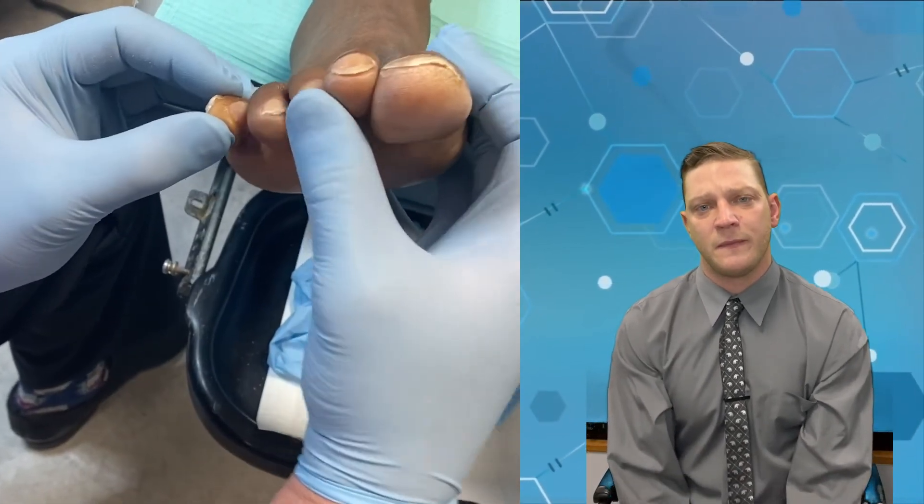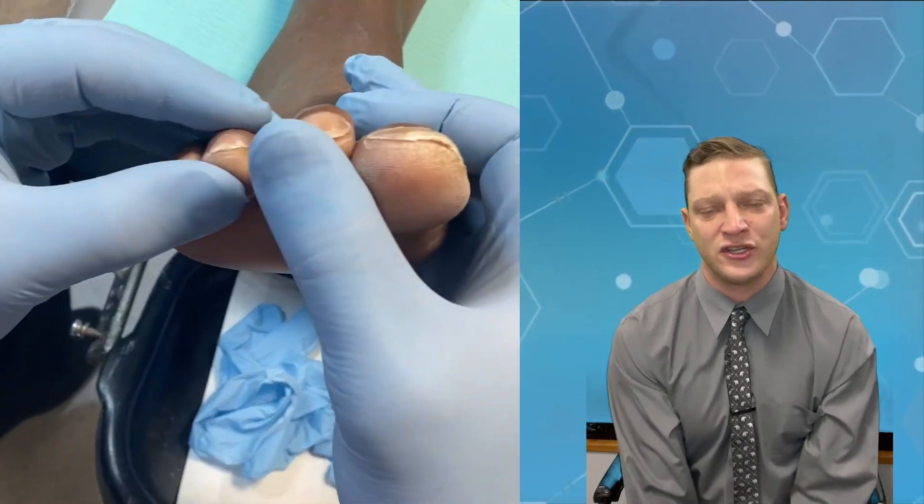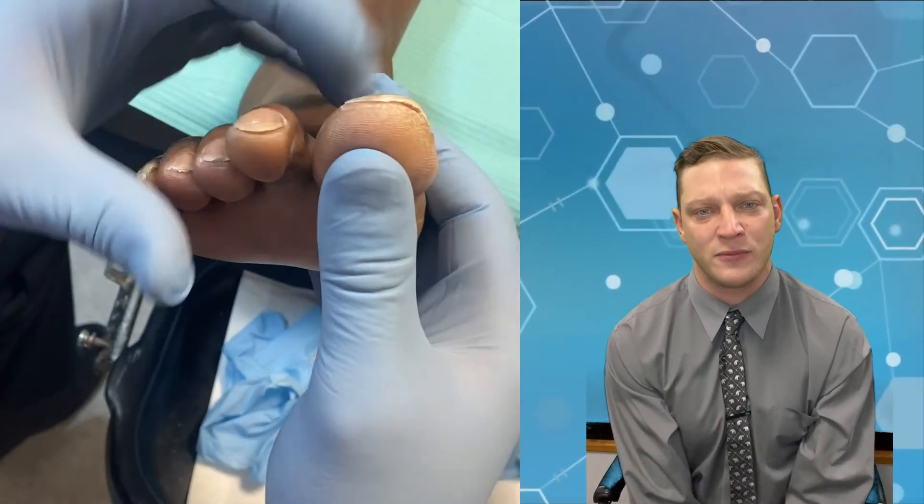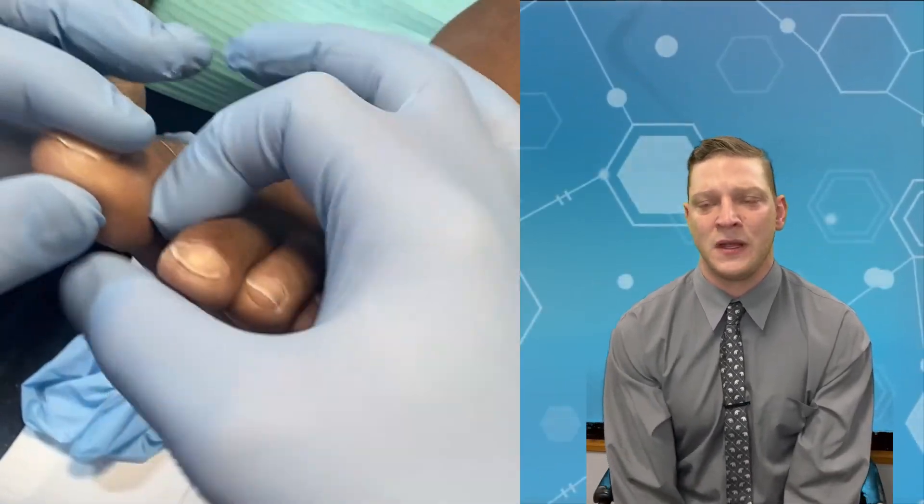I typically will use betadine splintage. I will splint these toes away from each other to allow for the maximum amount of absorption by this gauze and allow this ventilation to kind of be there. The betadine will have an antimicrobial effect to it. I will start having them treat the athlete's foot with either gels or creams or the terbinafine oral medication, which does work on the skin.